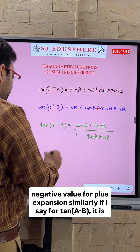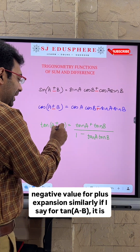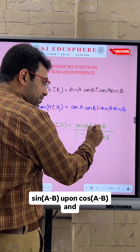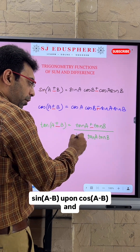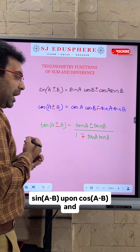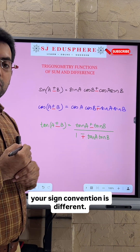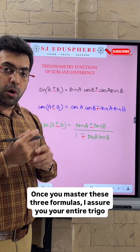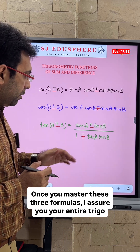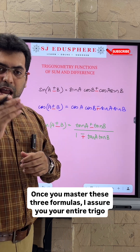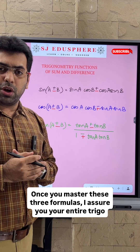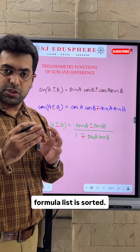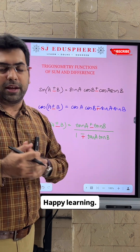Similarly, for tan (a − b), it is sine (a − b) upon cos (a − b), and hence the sign convention differs accordingly. Once you master these three formulas, I assure you your entire trigonometry formula list is sorted. Happy learning.